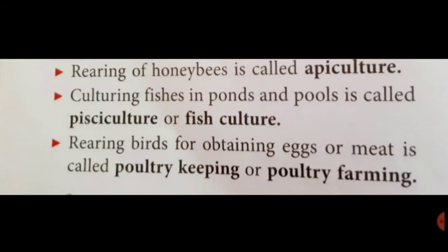Some important terms: Apiculture is the rearing of honey bees to obtain honey. Pisciculture, also called fish culture, is the culturing of fishes in ponds and pools. Poultry farming is the rearing of birds for obtaining eggs or meat.